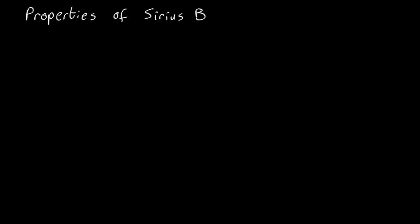Okay, so what are the properties of this thing that's making Sirius go in a circle? So what do we know? Well, we have Sirius, we know it has a mass, M1 is about twice the mass of the sun, so that's about 4 by 10 to the 30 kilograms.